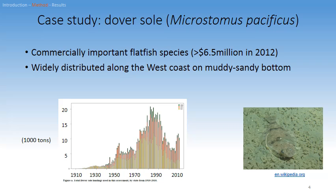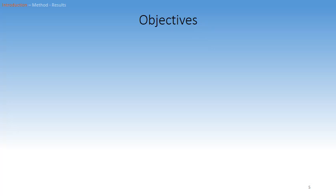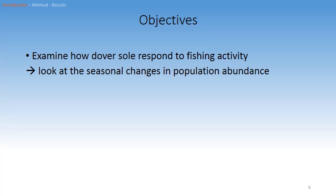In this study, we are going to take the example of Dorosol on the U.S. West Coast. Dorosol is a commercially important flatfish species widely distributed along the West Coast on sandy and deep bottom, which makes it a perfect candidate to study its distribution. We will be specifically looking at how the Dorosol population responds to fishing activity.